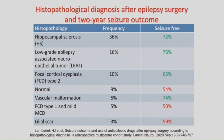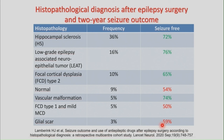Lam brick and colleagues studied more than 9,000 patients who underwent epilepsy surgery and analyzed the association between histopathology and seizure outcome. Hippocampal sclerosis was the most common pathology, followed by low-grade epilepsy-associated neuroepithelial tumors, focal cortical dysplasia type 2, normal pathology, vascular malformation, FCD type 1, and mild MCD and glial scars. The big question is how can we identify the pathology preoperatively.